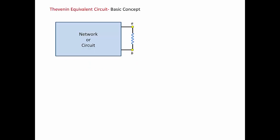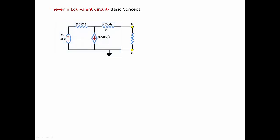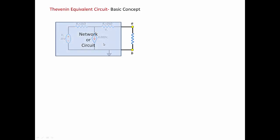Let's say that you have a network, as the one shown here, with a load resistance that is connected across its terminals. The network represented here can be of any circuit. For example, I can replace the network with this circuit, and now I want to Thevenize this particular circuit. So what we're going to do is remove the load resistance, and then the terminals A and B become open circuit.